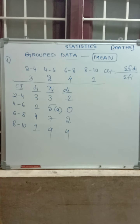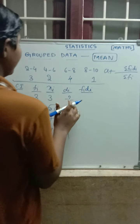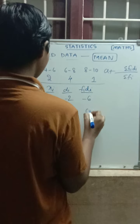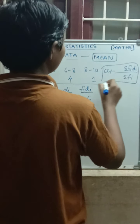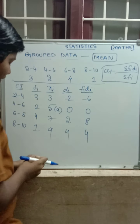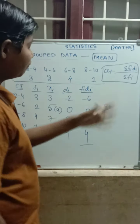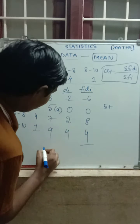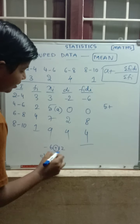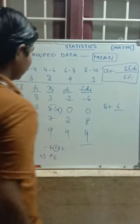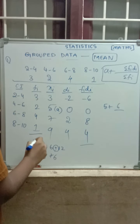Next, Fi·Di: 3 × (−2) = −6; 2 × 0 = 0; 4 × 2 = 8; and the last: 4. Now substituting in the formula: A = 5, plus summation Fi·Di. Adding the Fi·Di values: −6 + 0 = −6, then +8 = +2 (wait — bigger sign is plus). Summation Fi·Di: −6 + 0 + 8 + 4. The negative term is −6 and positives are 0 + 8 + 4 = 12, so summation Fi·Di = 12 − 6 = 6. Summation Fi: 3 + 2 + 4 + ... = 10.